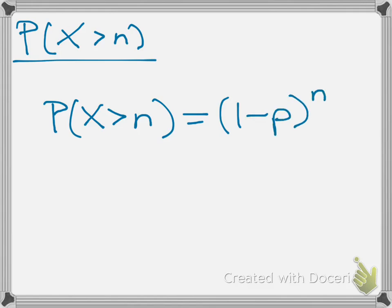If you think about it, this formula makes some sense because we know that if p is the probability of success, then 1 minus p is the probability of failure. So if we're looking at the probability that the first success occurs after the nth trial, that means that we've had n failures, which is why we have to raise the probability of failure 1 minus p to the nth power.